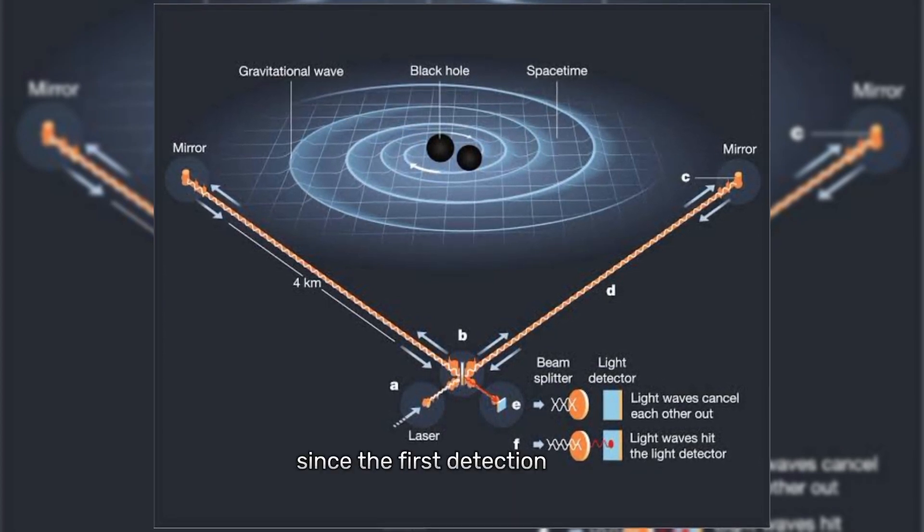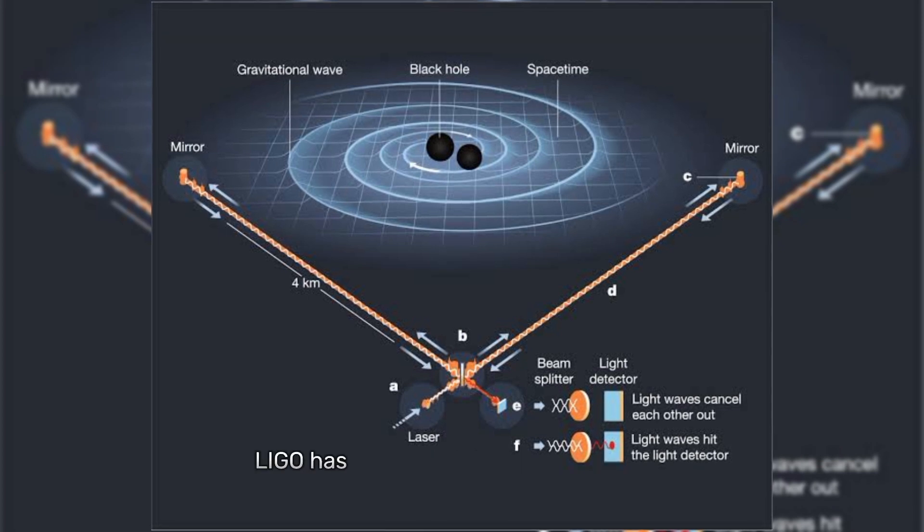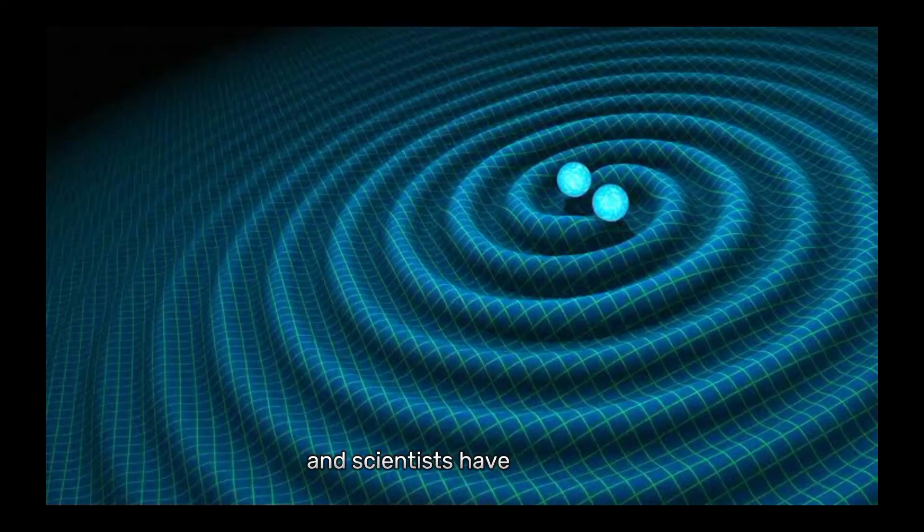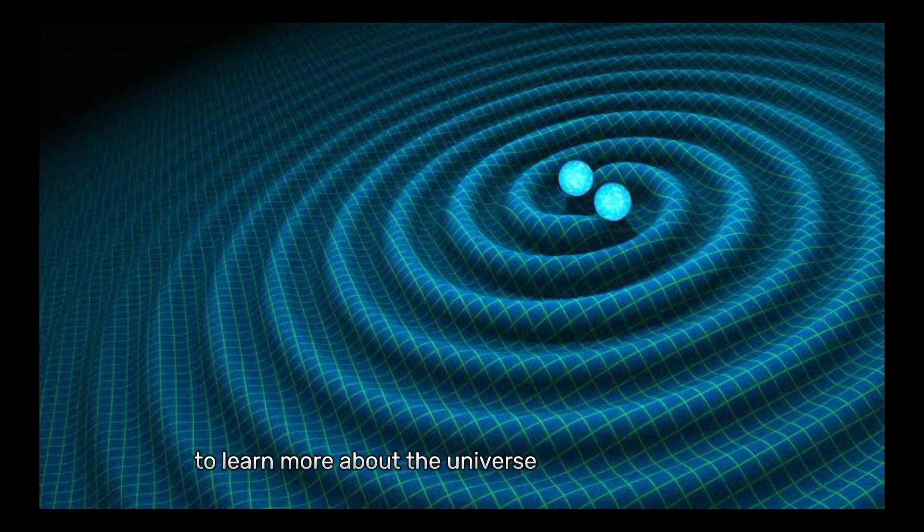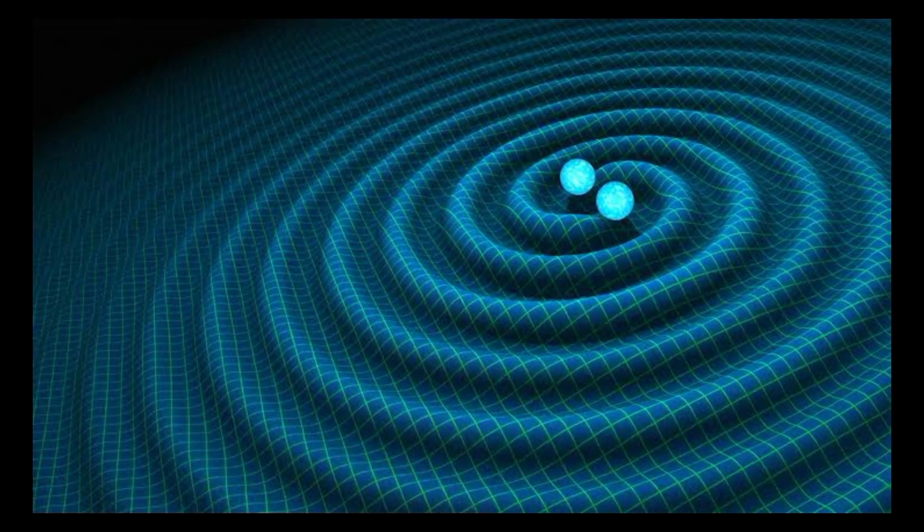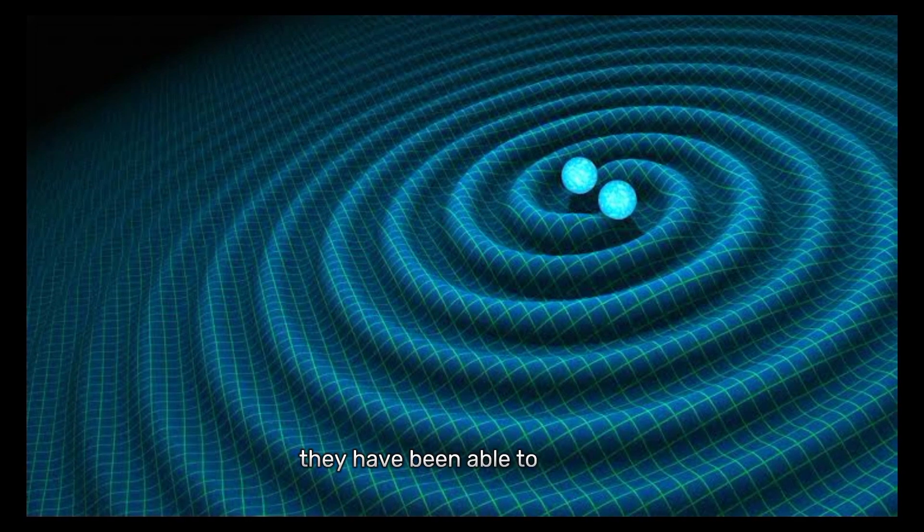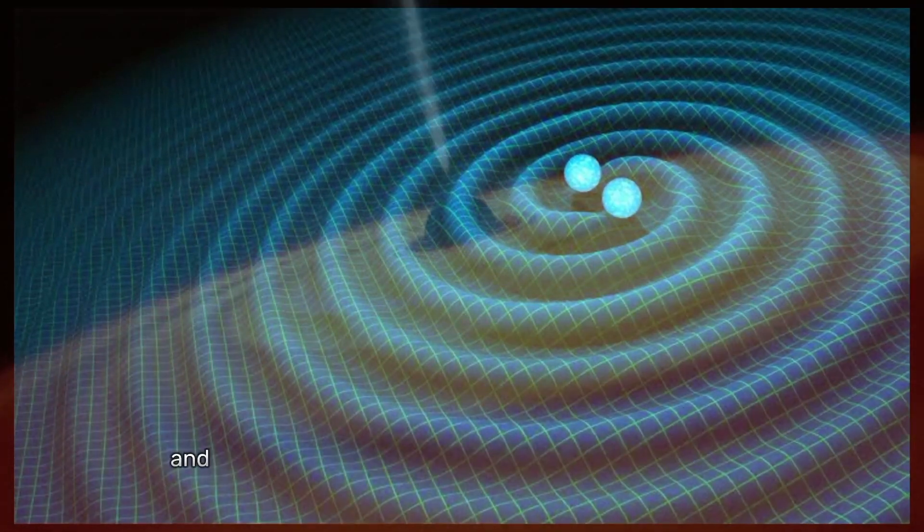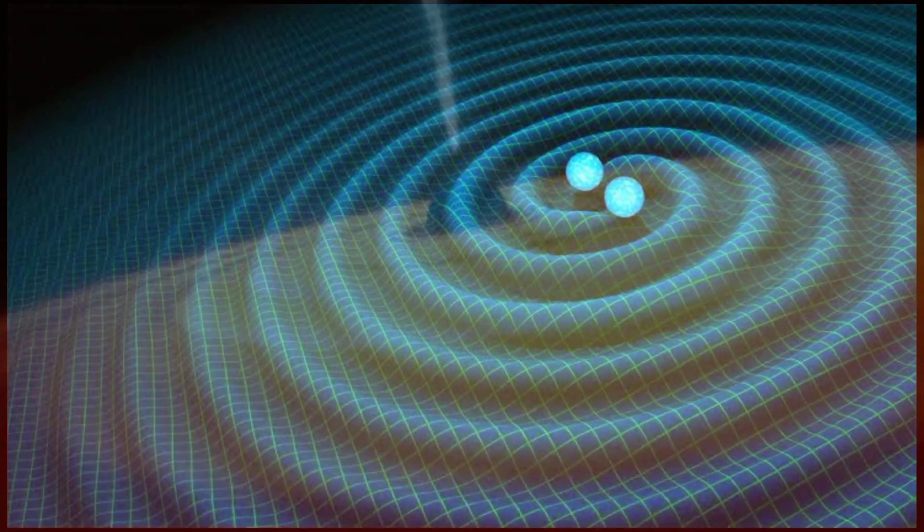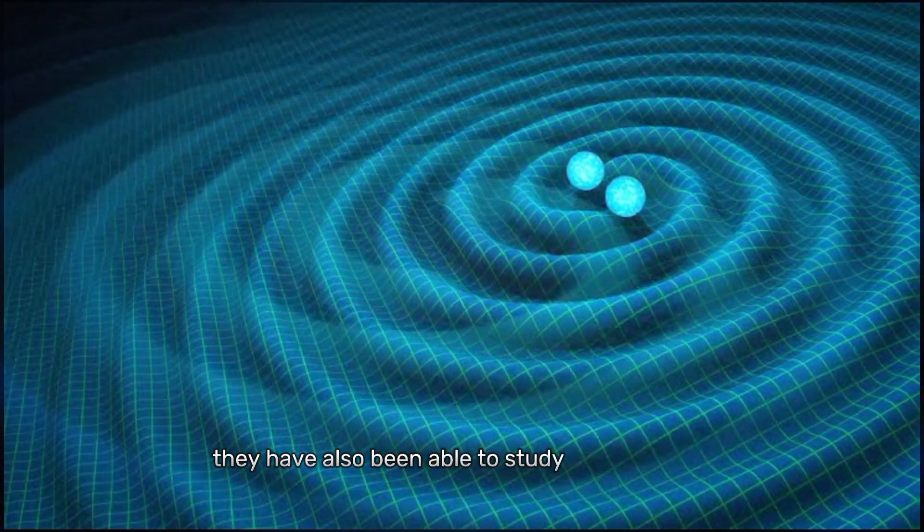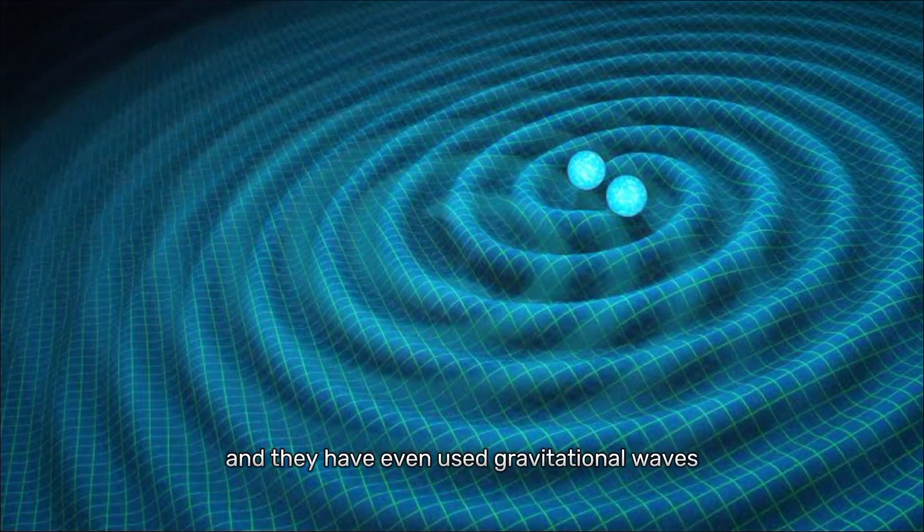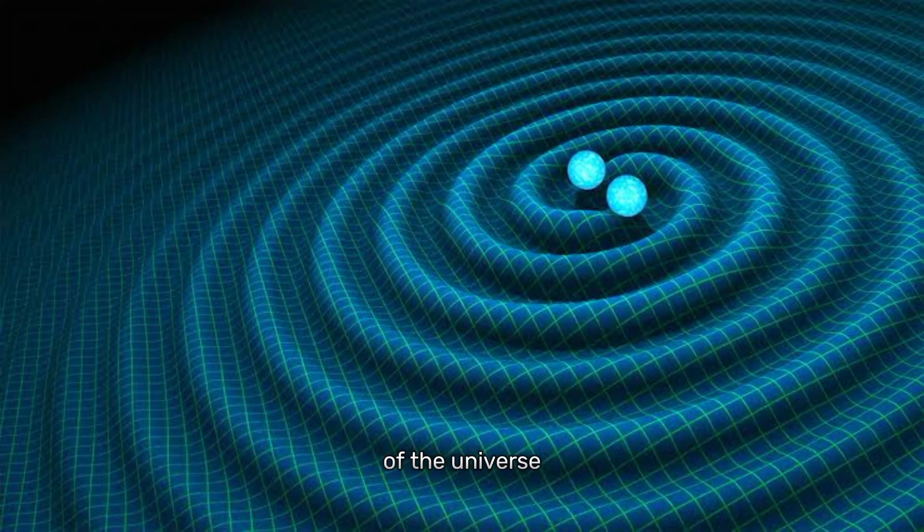Since the first detection in 2015, LIGO has made several more detections of gravitational waves, and scientists have been able to learn more about the universe from these waves. For example, they have been able to confirm the existence of black holes, measure their masses and spins, and learn more about the process of black hole mergers. They have also been able to study neutron stars and their mergers, and they have even used gravitational waves to map the expansion of the universe.